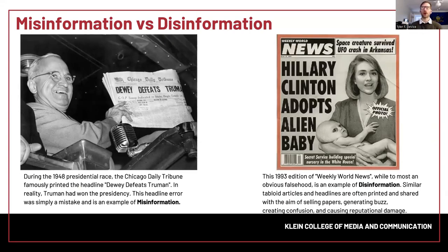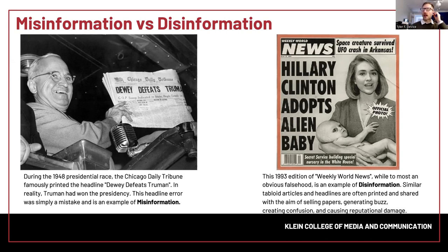Here's an actual example of misinformation. In 1948, we had a presidential election and Harry Truman won. But the Chicago Daily Tribune incorrectly published the headline 'Dewey Defeats Truman,' which was not the actual result — Truman had defeated Dewey. This is a very famous photograph of Harry Truman holding that incorrect paper. This is an example of misinformation — as soon as the paper printed it, they realized their mistake, but back then it was too late. The papers were already in the paper boxes. They kind of all had a laugh about it, but it wasn't done intentionally.